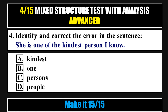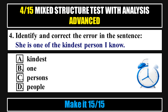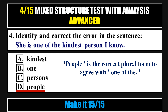Question 4. Identify and correct the error in the sentence: 'She is one of the kindest person I know.' Options: a. Kindest, b. One, c. Persons, d. People. Answer D: People. 'People' is the correct plural form to agree with 'one of the'.